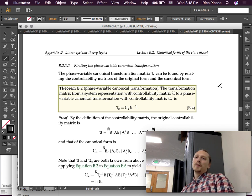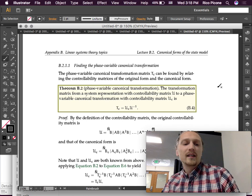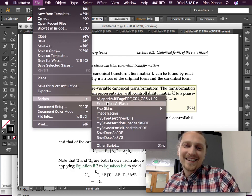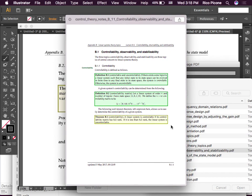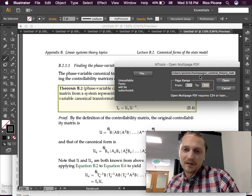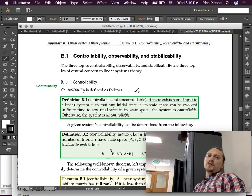So, the phase variable canonical form transformation matrix TC can be found by relating the controllability matrices of the original form and the canonical form. What is controllability, what is a controllability matrix? I'm glad you asked. Do you know what we have for that? An appendix. We have an appendix for that. You guys thought you were going to get away without another appendix, but you were wrong. But, this appendix is only one slide. So, not so bad.